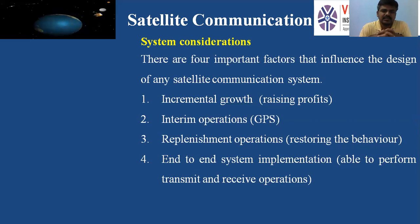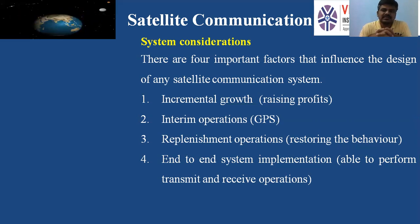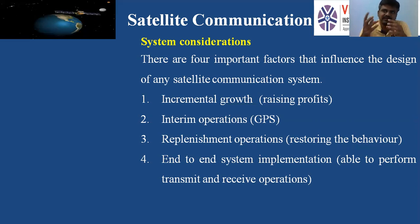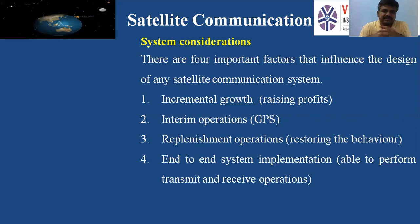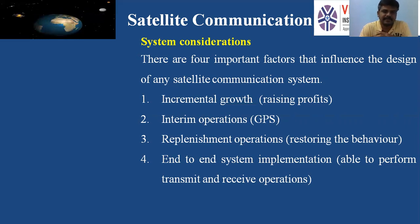Next is interim operations. When a satellite is initially launched, it is used only for one specific purpose — either communication or weather forecasting. But today, satellites are used for multiple purposes. For example, we are able to achieve location identification using any three satellites evolving in medium orbit. Using any three satellites together to find the location of any person — this is called interim operations.